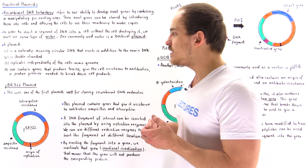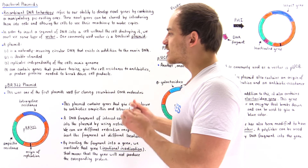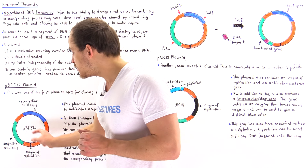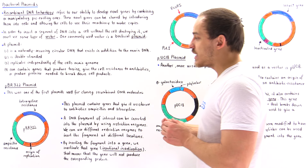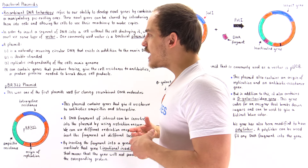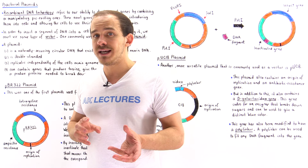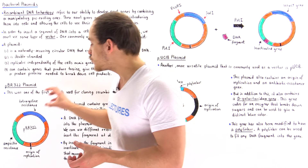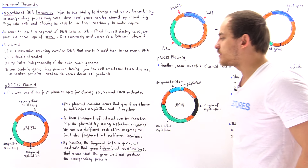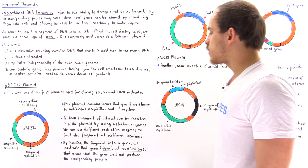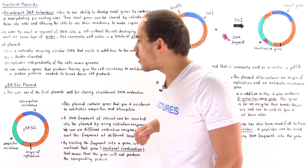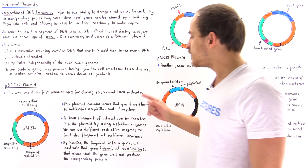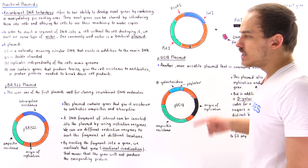Together, these two genes give the cell the ability to resist antibiotics. The plasmid also contains an origin of replication — this is where replication initiates. Because circular DNA does not have a beginning and an end, we need the origin of replication so that DNA polymerase knows where to begin. So PBR322 contains resistance genes for both ampicillin (green) and tetracycline (blue).